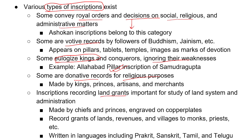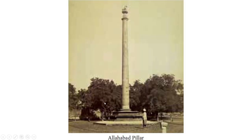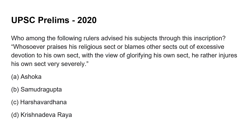Inscriptions reveal the king's character, his administration, land system, donations, though they mostly ignored weaknesses and only talked about achievements. These were made by chiefs and princes and engraved on copper plates. This is the Allahabad pillar, standing tall and strong till now.